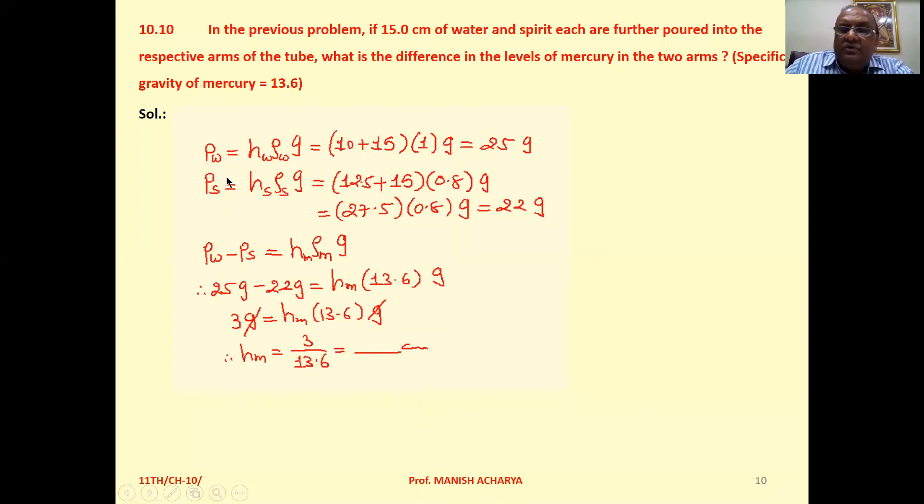The water column - initially it was 10 centimeters and now another 15 centimeters of water is poured. So pressure exerted by water column, that is H water times rho water times G. Height of the water column, initially it was 10 and now additional 15, so total 10 plus 15, density of water 1 into G. So now the pressure exerted by water column, that is 25G.